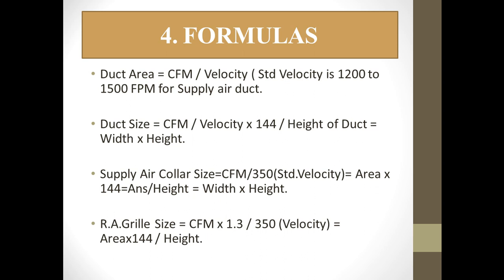To calculate the return air grill size: Return Air Grill Size = (CFM × 1.3) / 350. The factor 1.3 accounts for 30% additional area of the entire return air grill. Divide by the velocity of 350 FPM to get the area, multiply by 144 for square inches, then divide by the height to get the width — giving you the return air grill size.